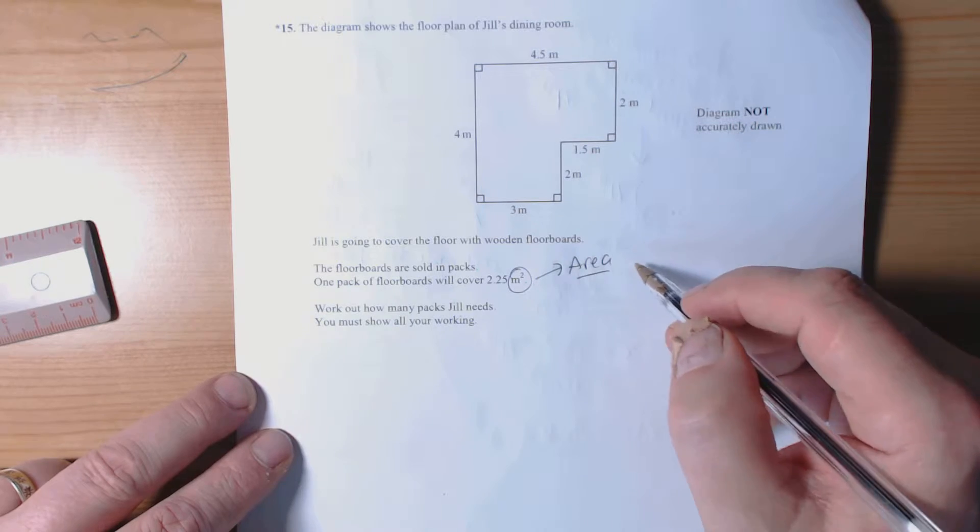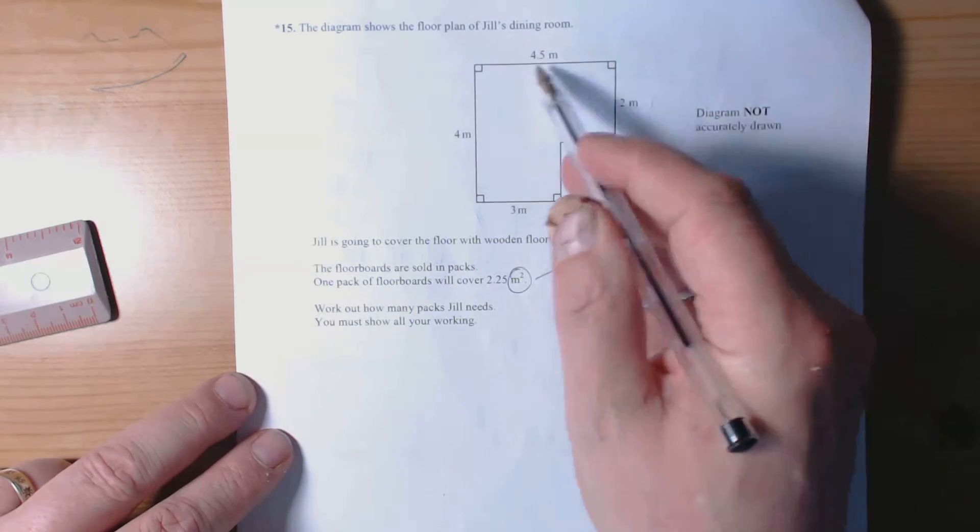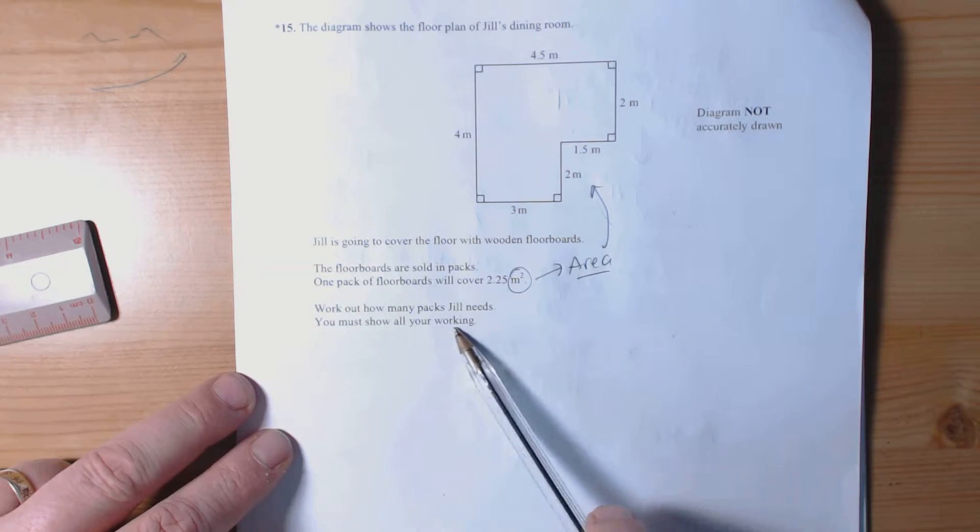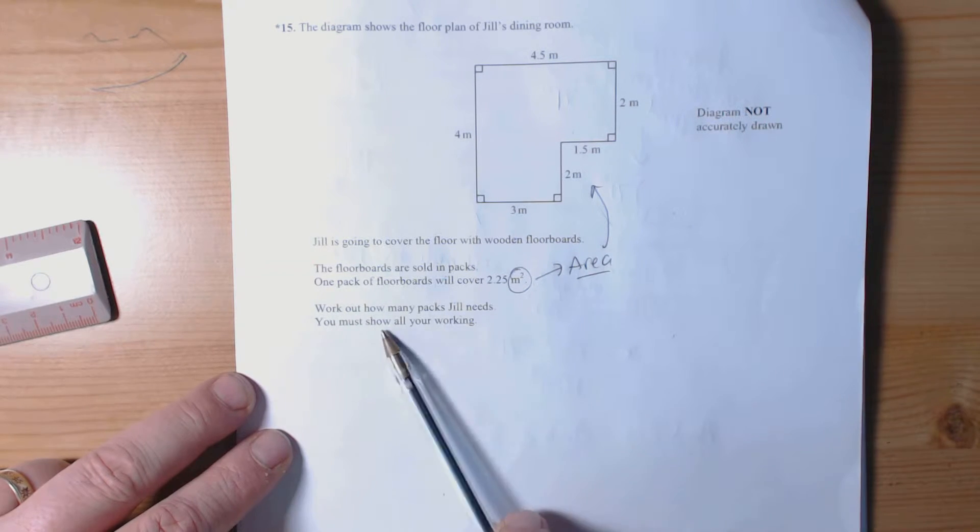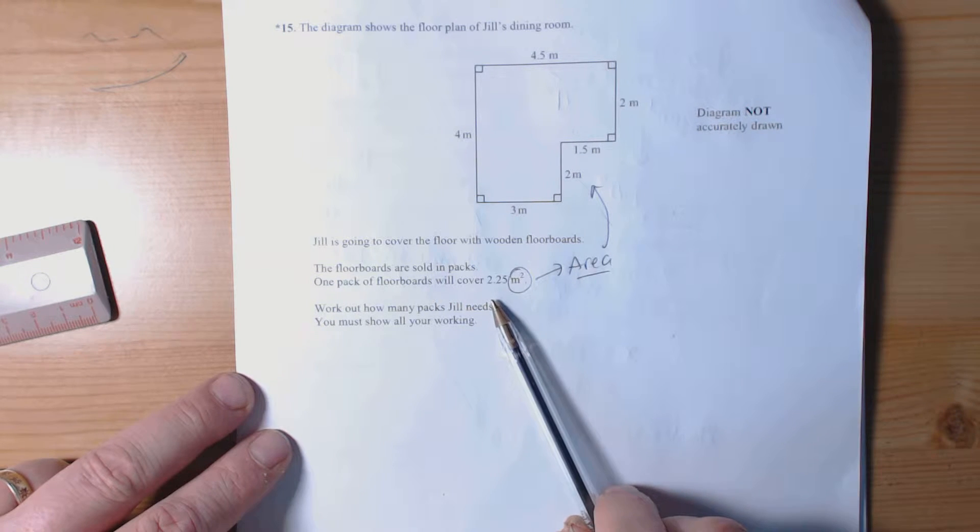So we need the area of this compound shape. How many packs will she need? If we work out the total area and then we can divide it by 2.25 square meters, that's one way.